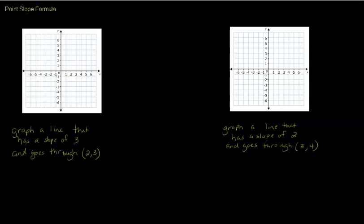We're first going to start by graphing a line that has a slope of three and goes through (2, 3). The first thing we ever have to do is know where one of the points is — we can't just start the slope without knowing one of the points it goes through. So we're going to go to (2, 3): right two, up three. Then, since it has a slope of three, we go up three over one. This is what our graph looks like and it goes on for infinity.